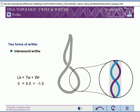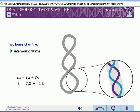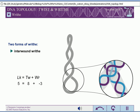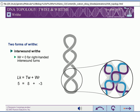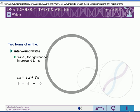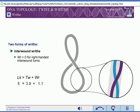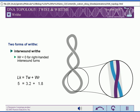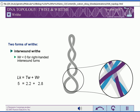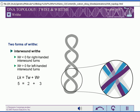Note that, although the linking number must be an integer, the twist and writhing numbers can have fractional values. If right-handed DNA writhes to form a left-handed interwound helix, the twist number of the DNA decreases. Therefore, left-handed interwound turns are assigned positive writhing numbers.